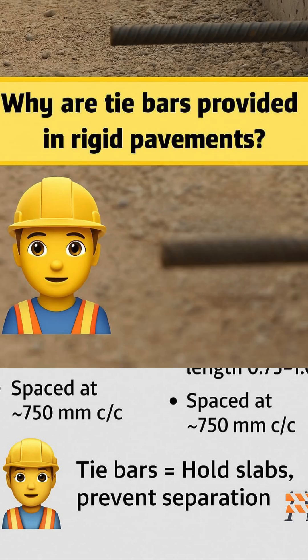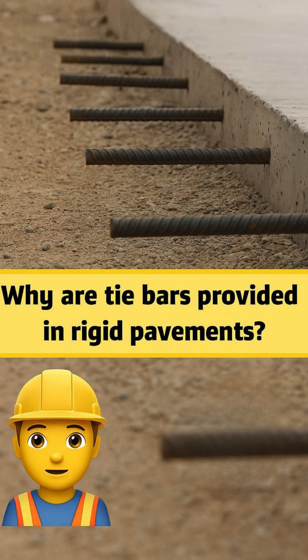In simple words, tie bars hold slabs and prevent separation. Without tie bars, joints may open, cracks will develop, and pavement life will reduce.